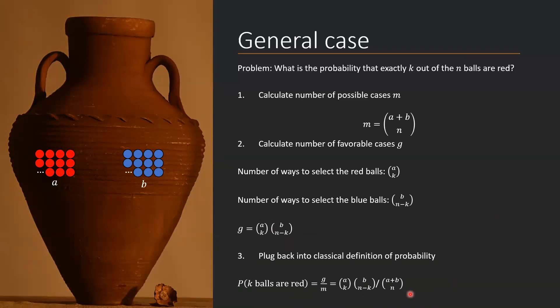For instance, you could take the case we had before with A equals 1, B equals 3, k equals 1, and n equals 2. Plug it into the formula and you should get 50%.